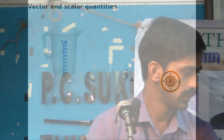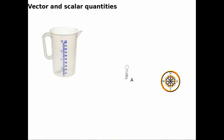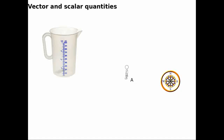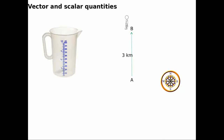Now we can see vector quantities. The position of A is a position. It is a direction — in the north, south, and east direction. This is the direction of the north.